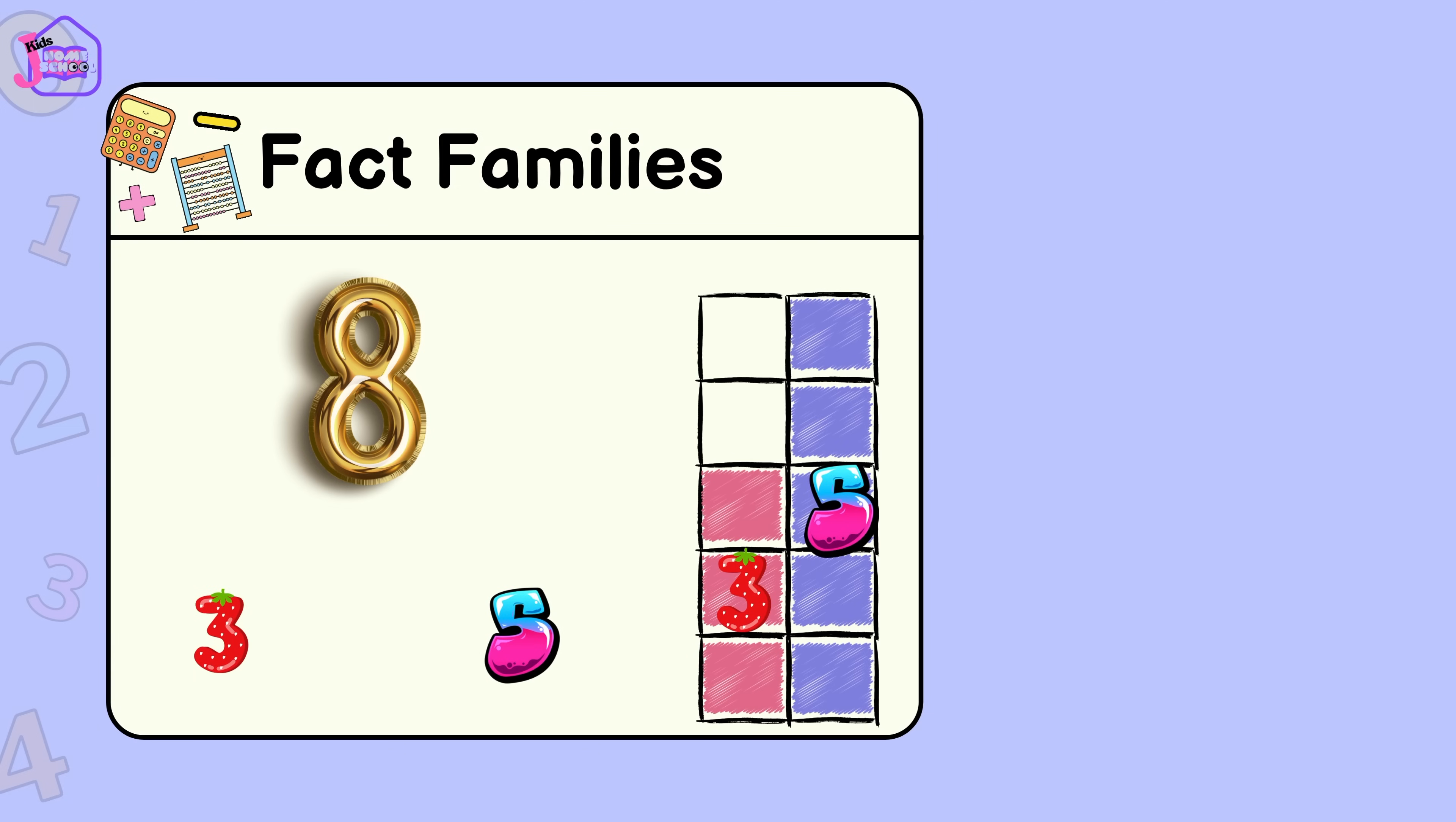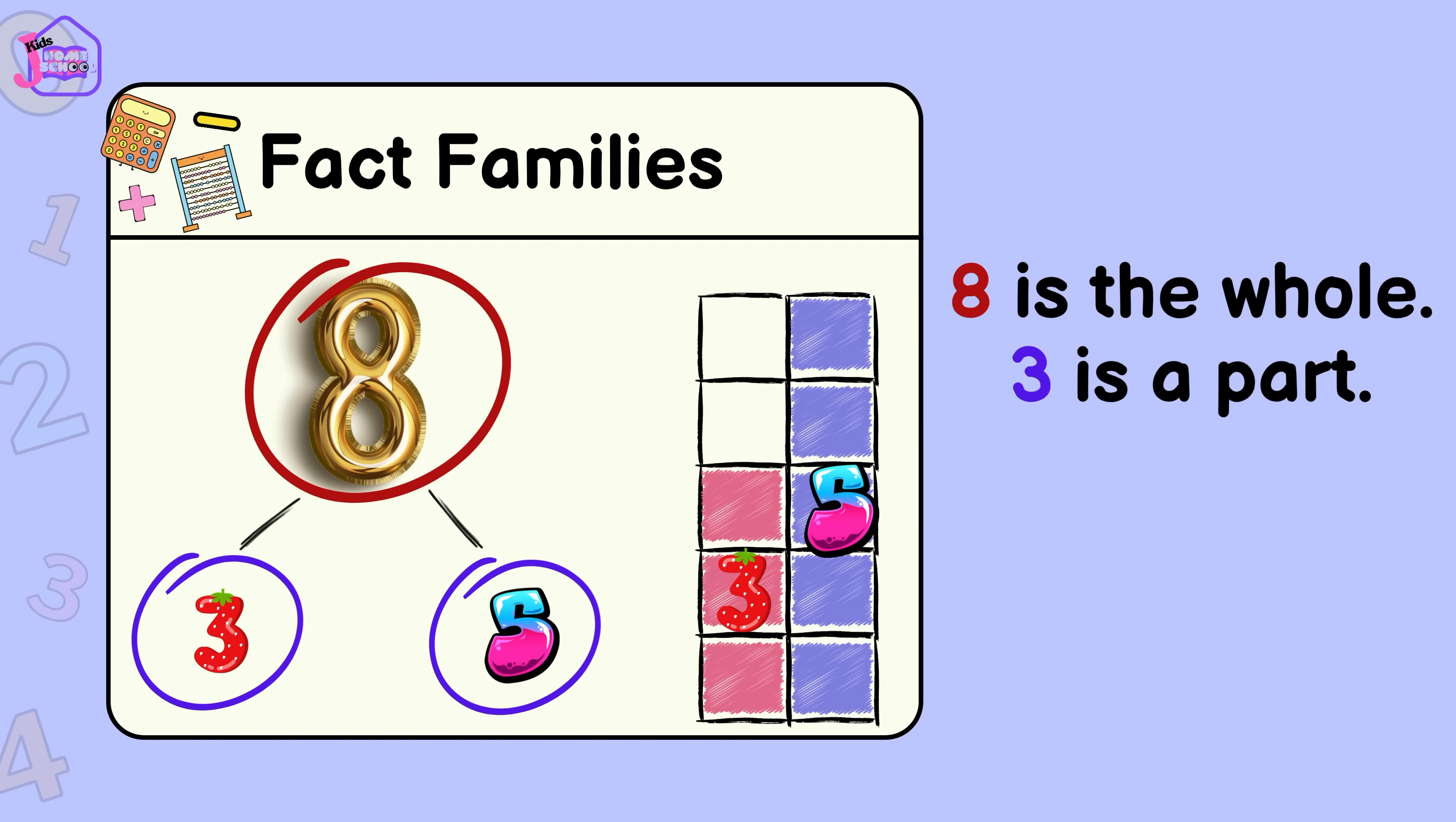5 and 3. We can call the big number the whole, and the two smaller numbers are the parts. 8 is the whole. 3 is a part. 5 is a part.